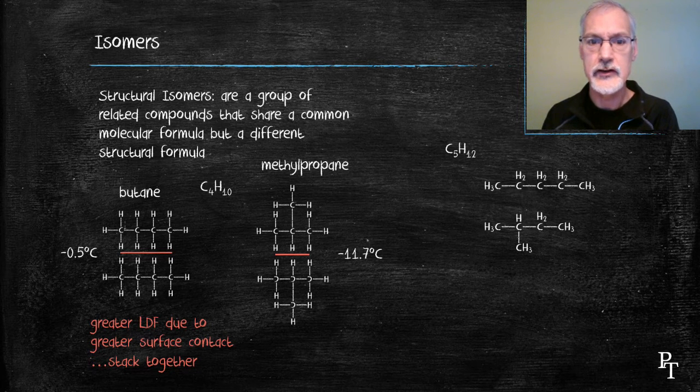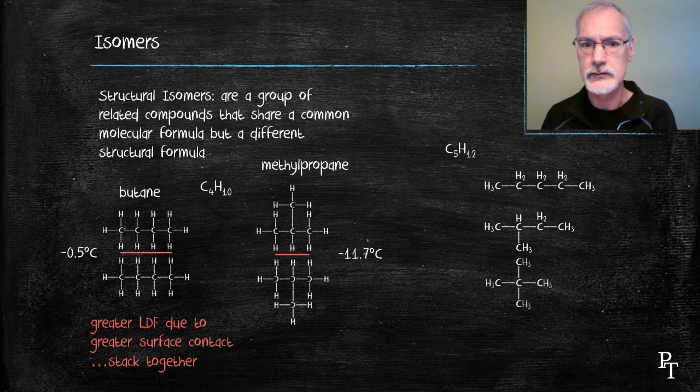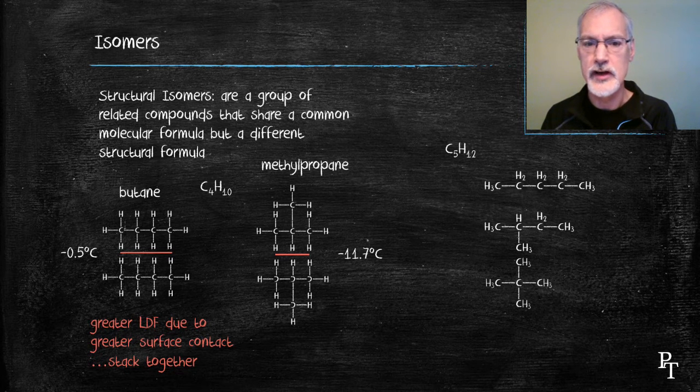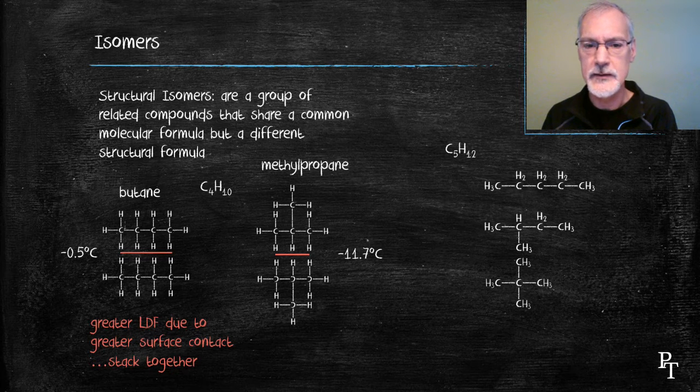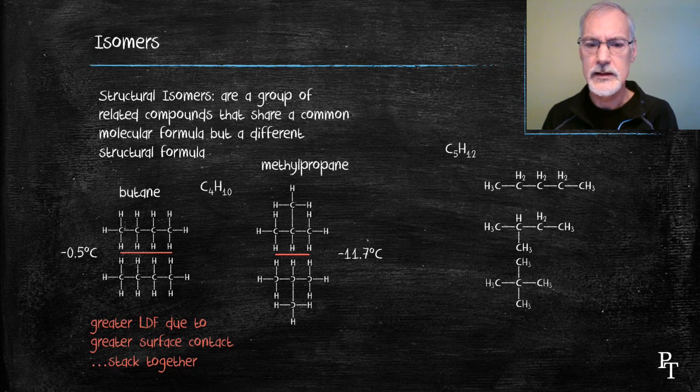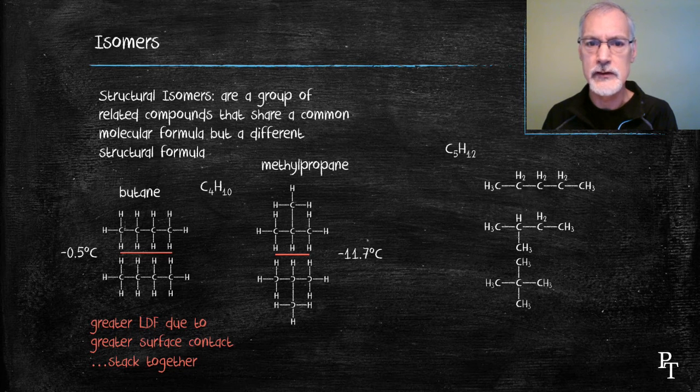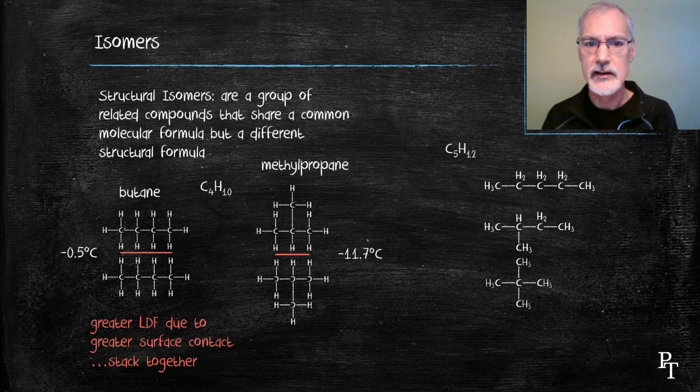The next one to try then is a 3-carbon chain with two methyl groups attached. So I'll put them both on the middle carbon. And this would be 2,2-dimethylpropane. Now, no matter where I move those methyl groups, I will only recreate one of the first two molecules. So I've exhausted all of my possibilities. This particular formula has three isomers.